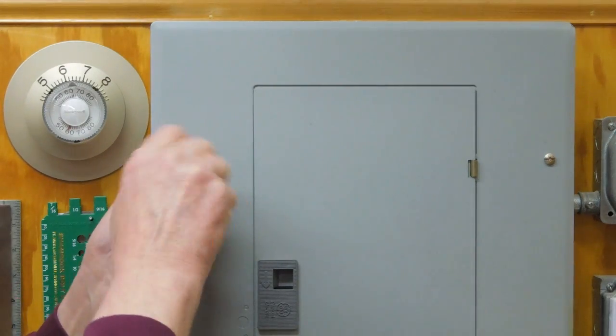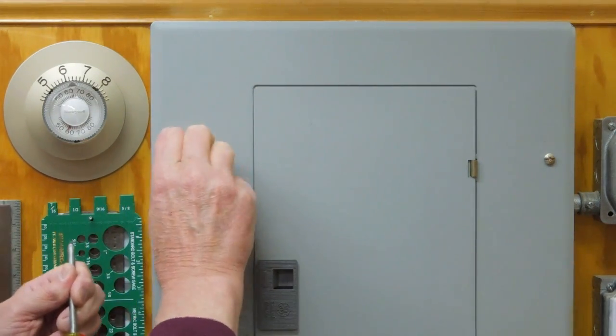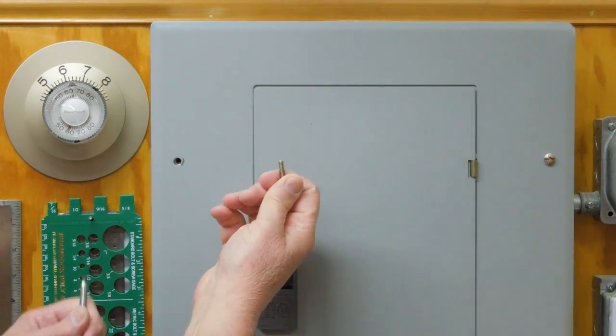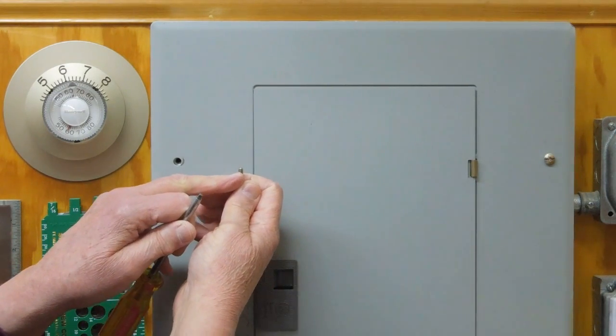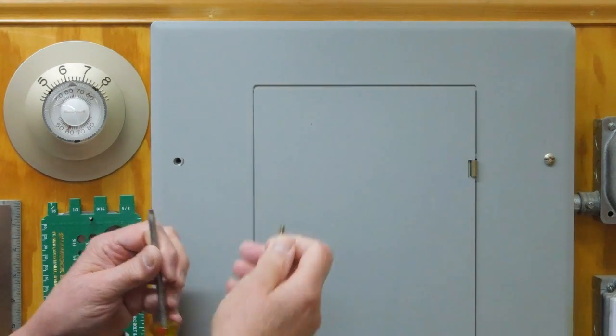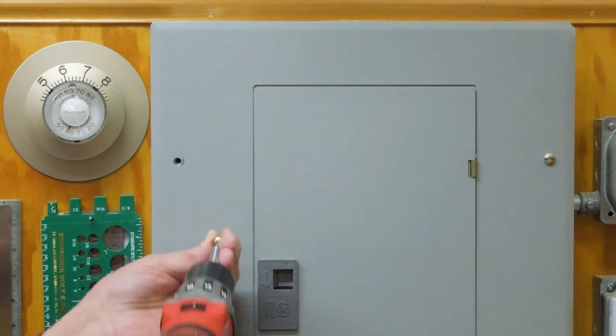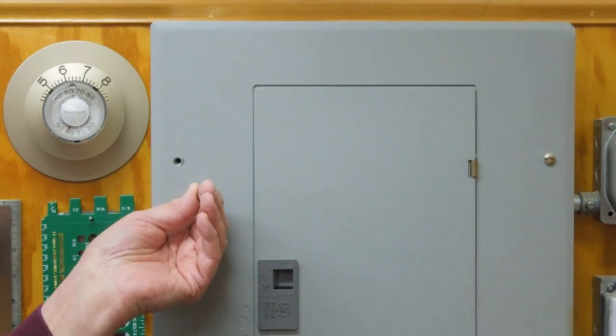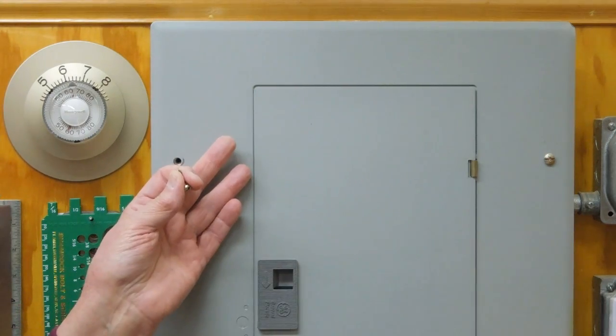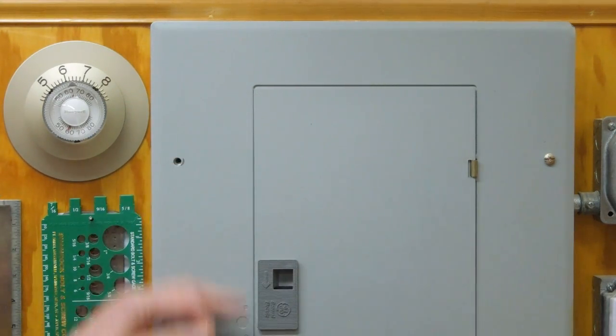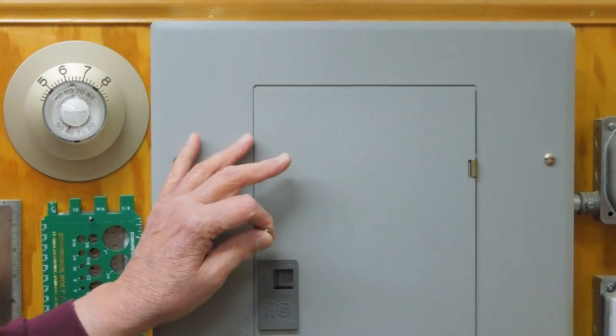One thing electricians don't like about these is they tend to have long threads. The other problem with these is they tend to be self-tapping screws for a lot of these panels. First thing he's going to do is take the cordless and just start driving them in there. He's in a hurry. This panel has four screws. A lot of them will have six or eight.